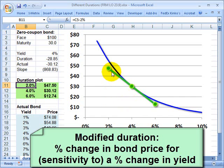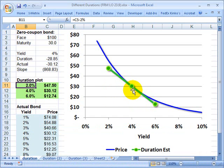And so this green line is based on duration and gives us a linear approximation of the change in the bond price for a change in yield. Or in other words, what happens to my y-axis, which is price, for a change in yield, which is the x-axis.